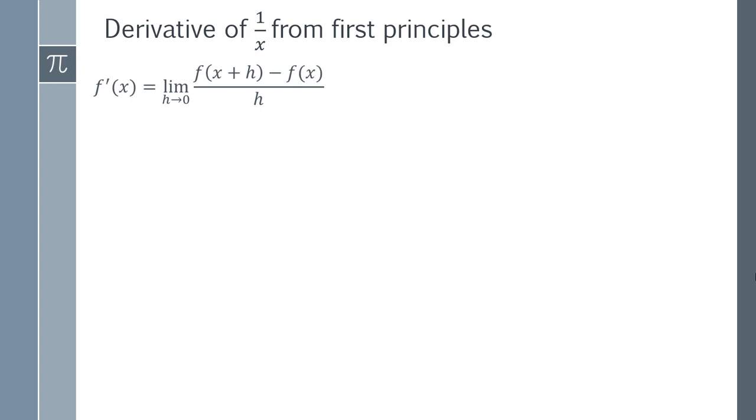Start with the statement of first principles which says that the derivative of any function is the limit as h tends towards 0 of f of x plus h, that's your function f of x plus a little bit of h, and then we're subtracting the original function f of x and dividing that by h. And this actually gives you the derivative of any function.